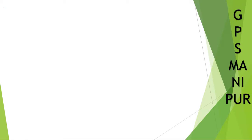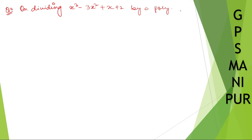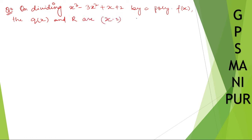Now we are doing Exercise 2.1, Question number 3. The question says: on dividing x cubed minus 3x squared plus x plus 2 by a polynomial f(x), the quotient and remainder are x minus 2 and 4 minus 2x respectively. Find f(x).